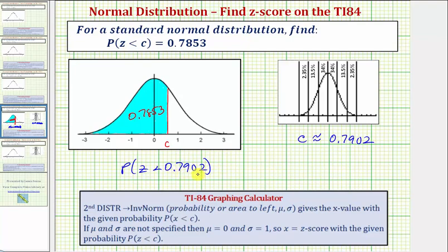Because we did round this value of c, this would be approximately the given probability of 0.7853. Next, we'll look at an example where z is greater than c. I hope you found this helpful.